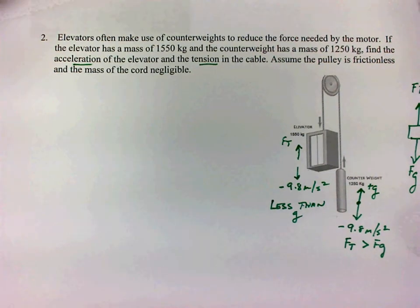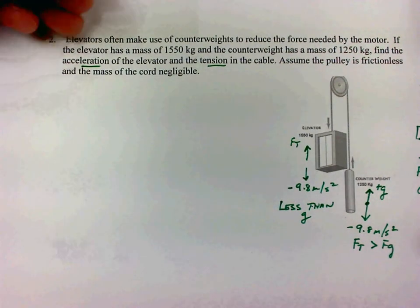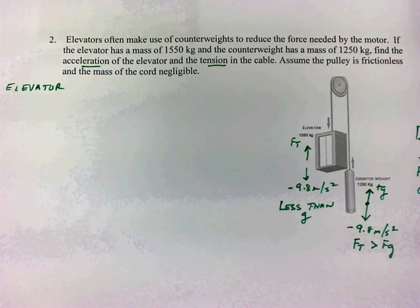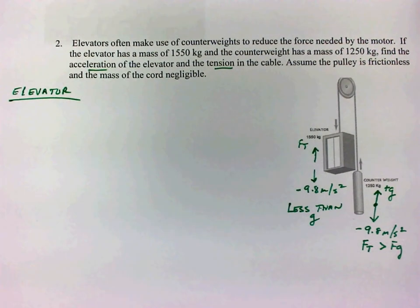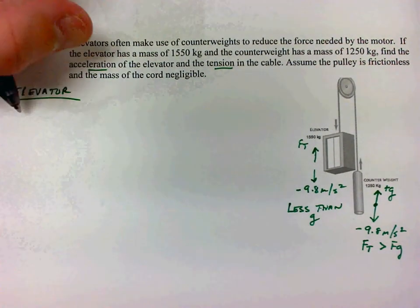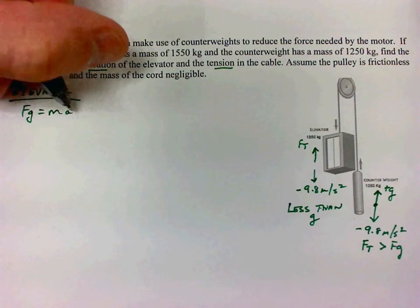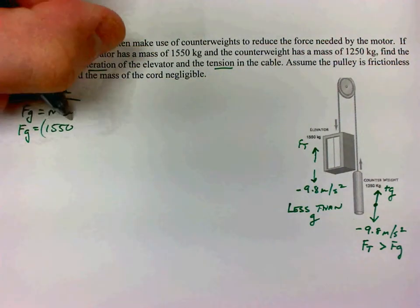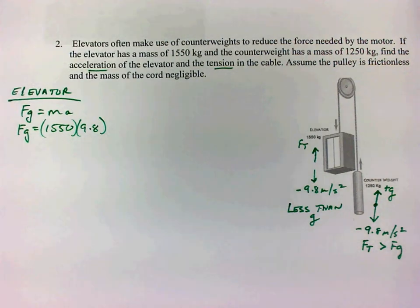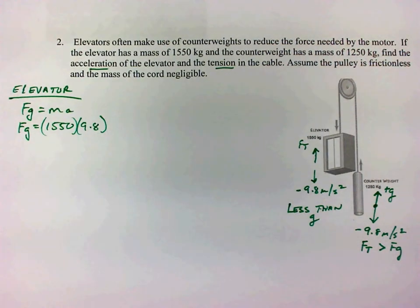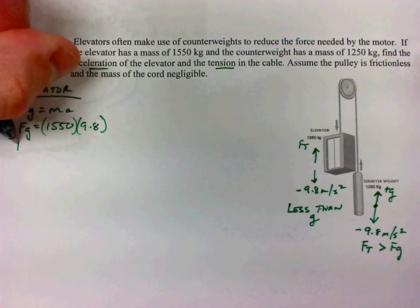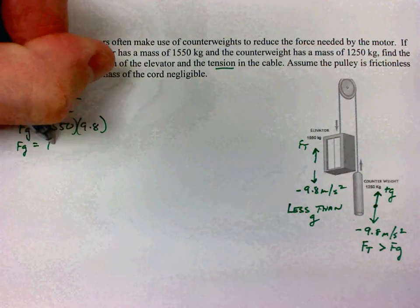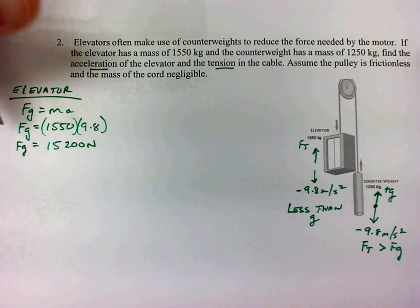We'll solve both of those out. For the elevator: FG equals ma, mass is 1550 kilograms times 9.8, giving us FG of the elevator equal to 15,200 Newtons (three significant figures).